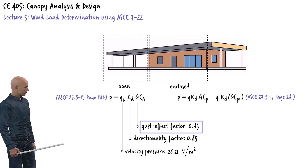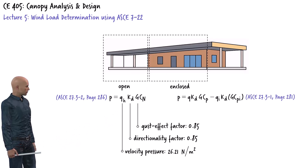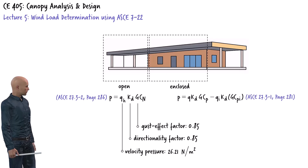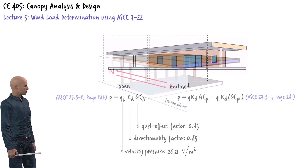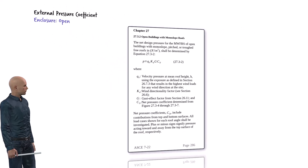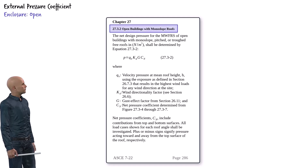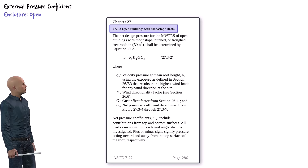In this lecture we'll focus on determining the external pressure coefficients for the open portion of the canopy, and from there calculate the resulting design pressure acting on a typical frame structure supporting the roof. For this part of the structure we concluded that the critical wind direction is in the plane of the frames, meaning wind blowing from south to north or north to south. To determine the wind pressure on the roof of the open portion of the canopy, we turn to section 27.3.2 of ASCE 7-22. This section provides wind pressure coefficients specifically for open buildings with monoslope roofs, which matches the configuration of our bus terminal canopy.